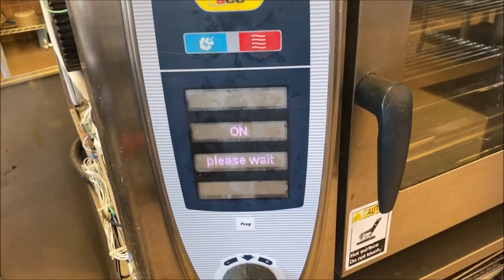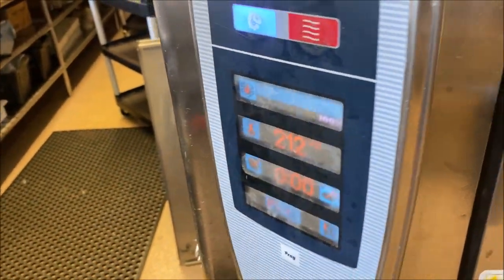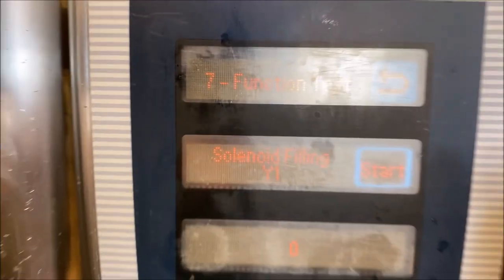How's it going? Today I'm working on a Rational combi oven that is not heating up, so let's take a look. We're getting the water tap light, which is telling us we may have some low water.